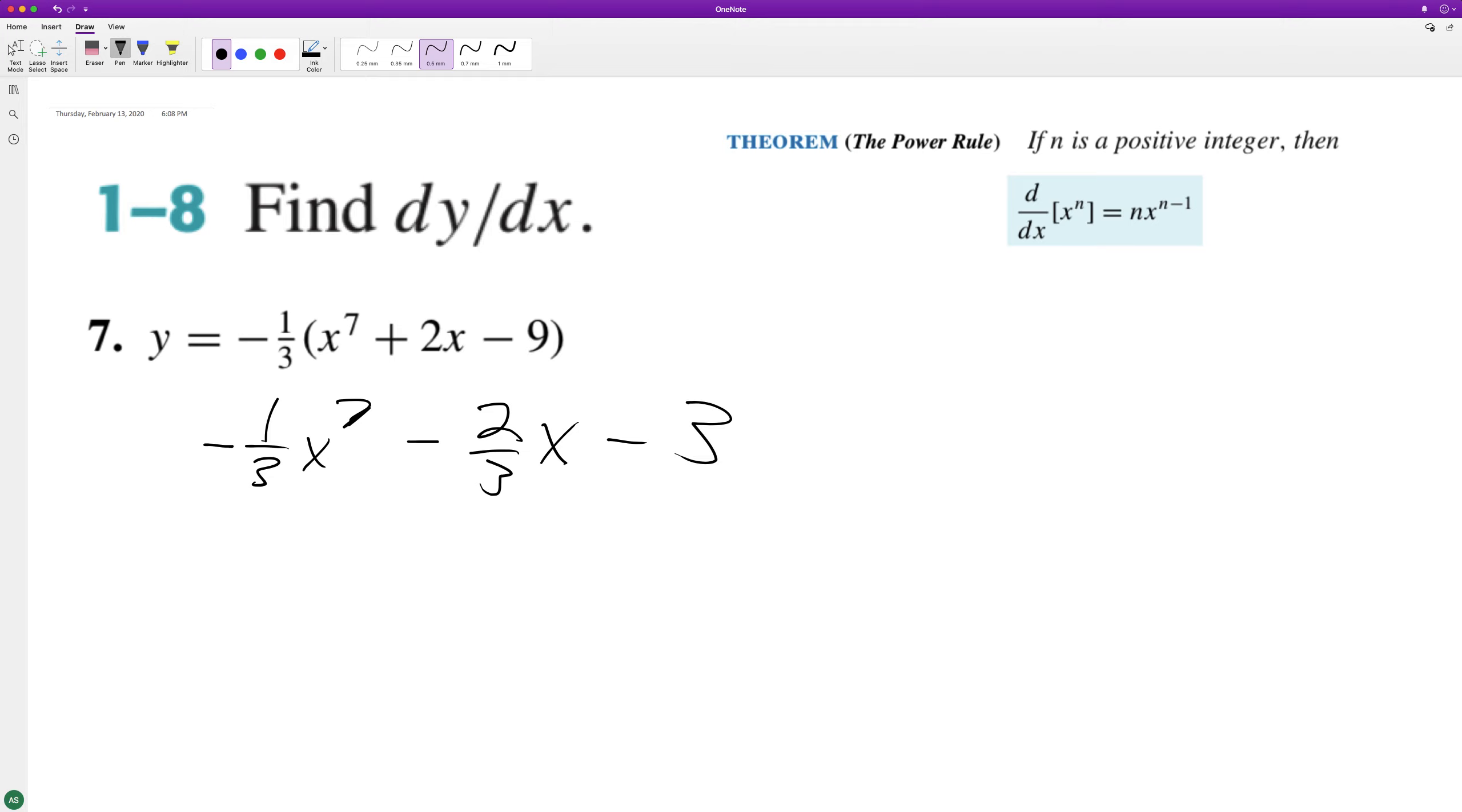three, because one-third times negative one-third times negative nine should be plus three.